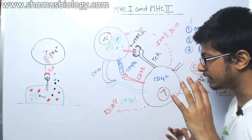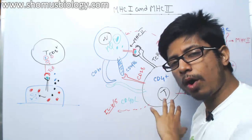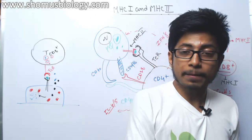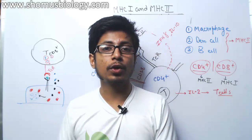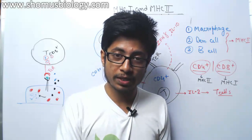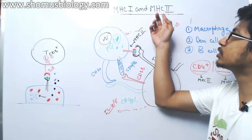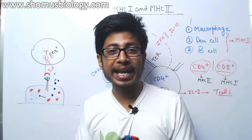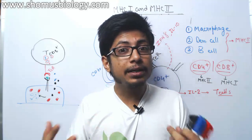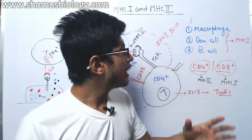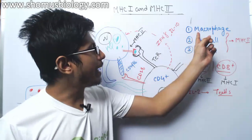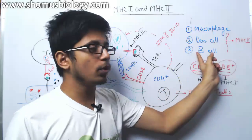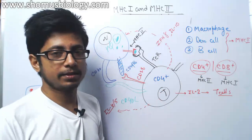Going back to the discussion — all nucleated cells carry MHC class 1, but they lack MHC class 2, because MHC class 2 is only found in antigen presenting cells, or APCs. The antigen presenting cells in the immune system are macrophages, dendritic cells, and B cells — these are known as antigen presenting cells.